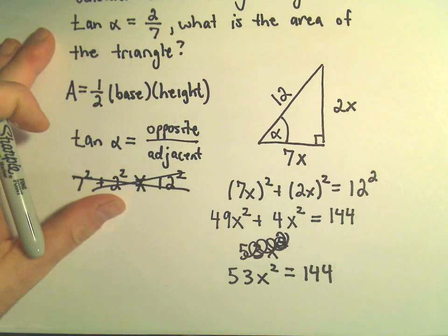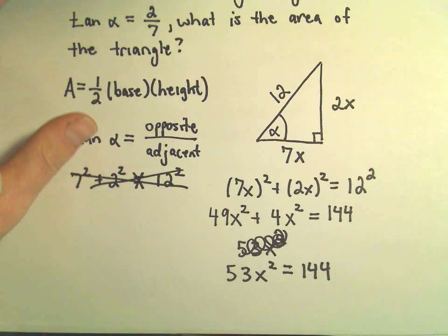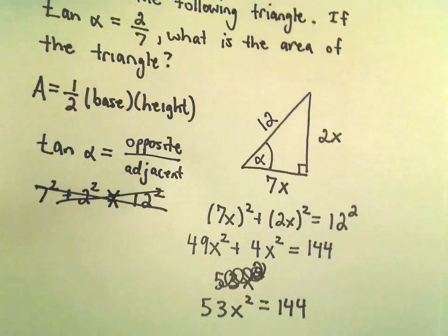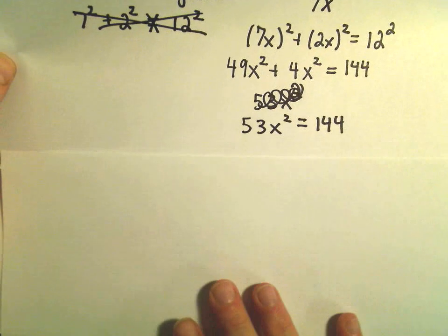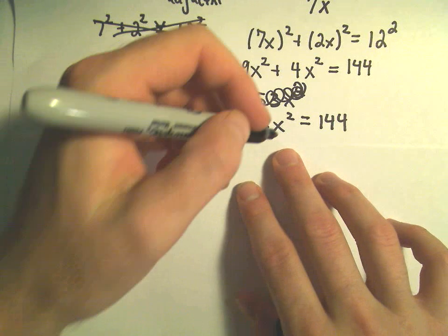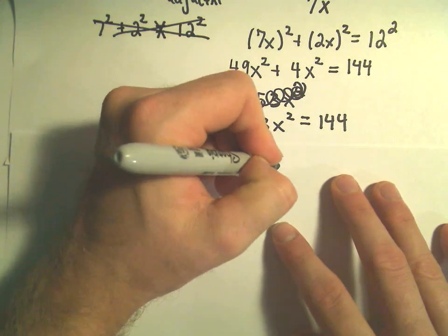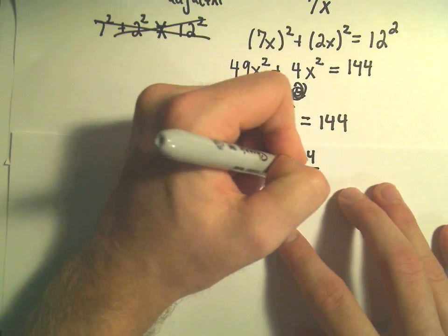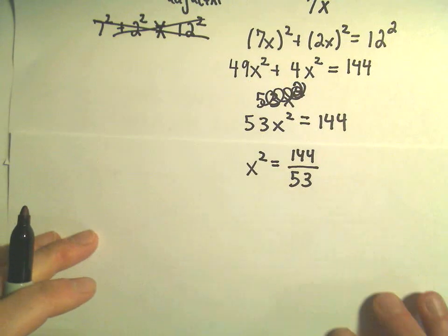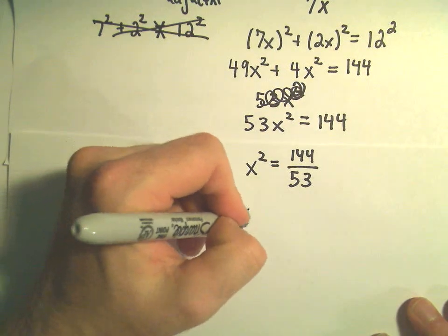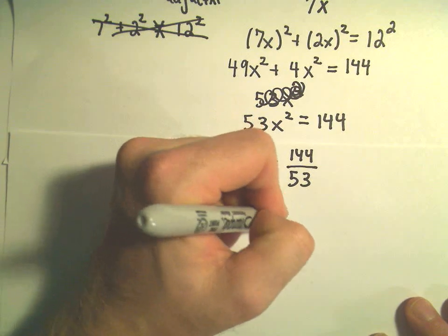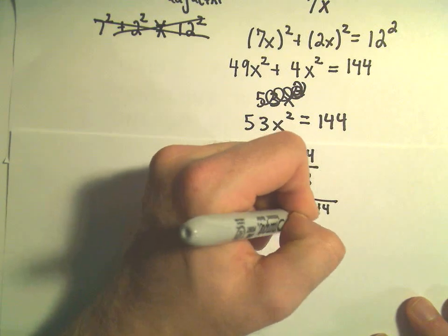All right, so, got to keep solving here for x. So, what I would do is simply divide both sides by 53. So, we'll get x squared equals 144 over 53. We can take the square root of both sides. Again, normally when you take square roots for equations, you get positive and negative.